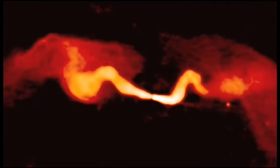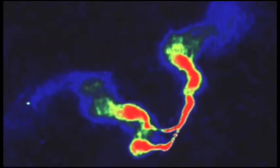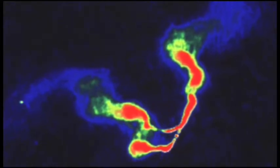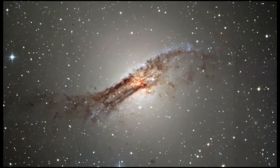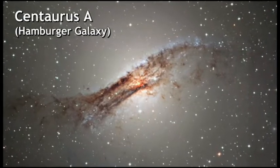Black hole jets have been seen all around the universe, including in our own cosmic neighborhood. This is Centaurus A, also known as the Hamburger galaxy.